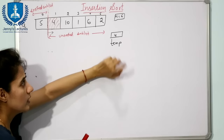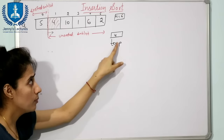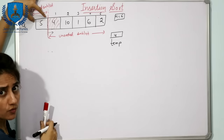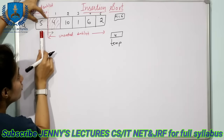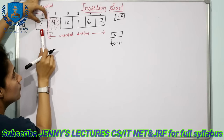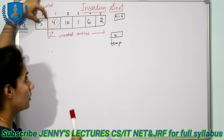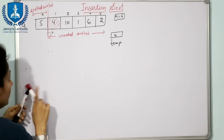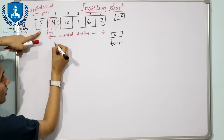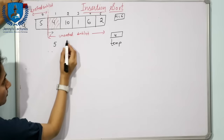The second step is to compare this value with variables in the sorted sublist to find the proper place. In the sorted sublist, we have only one value: 5. Compare this 4 with 5. Now, if the sorted value is greater than the temp value, we shift that value one place to the right. Since 5 is greater than 4, we shift 5 one place right — so 5 moves from A[0] to A[1].